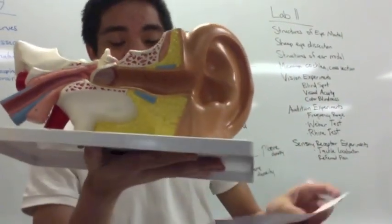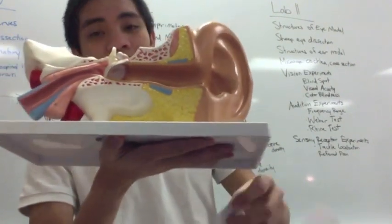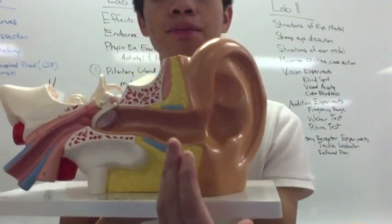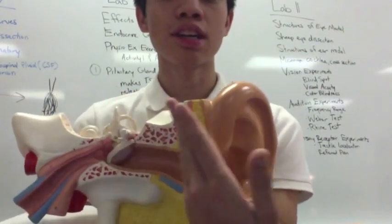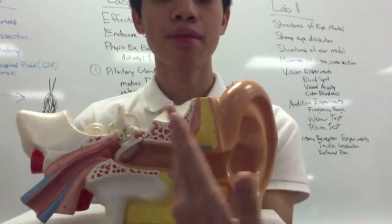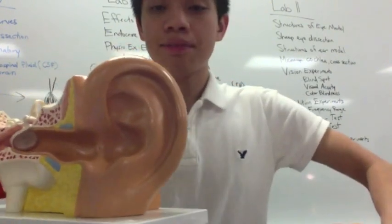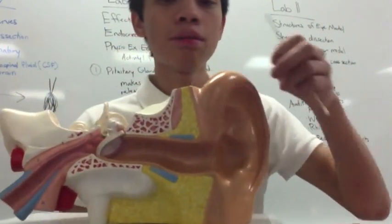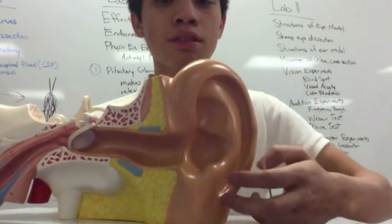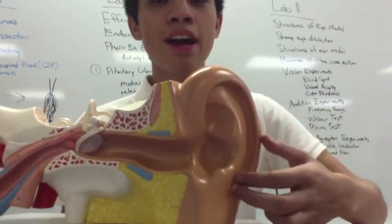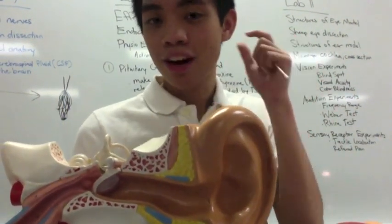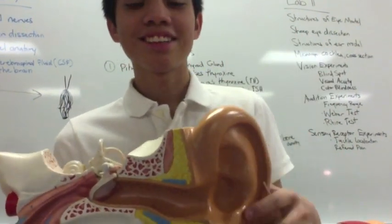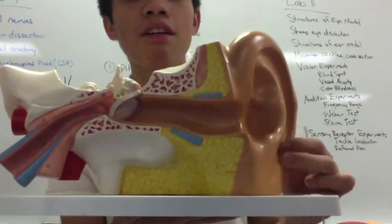So this is the ear, of course. You have the outer ear, which is this section right here, and you have your pinna or your auricle, which is this little thing right here. This is what you normally see on the outside of your body — your pinna or your auricle.